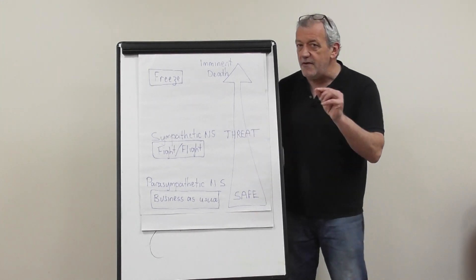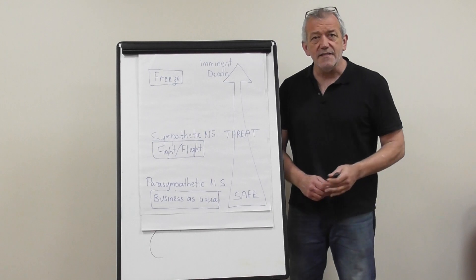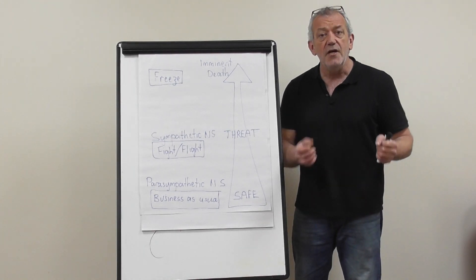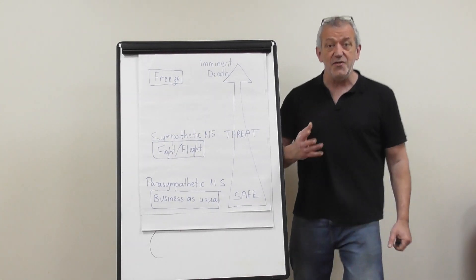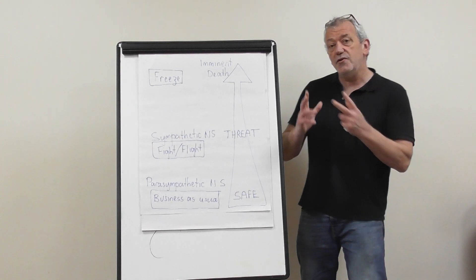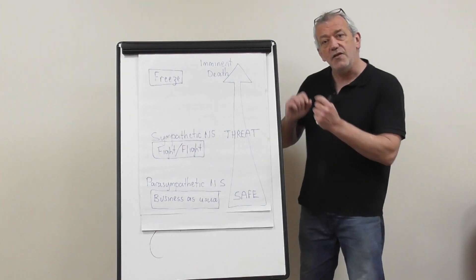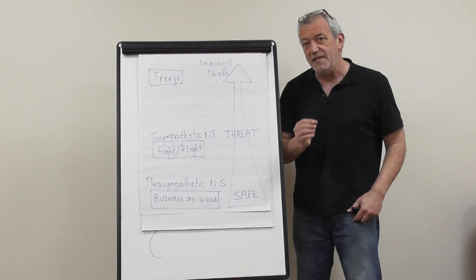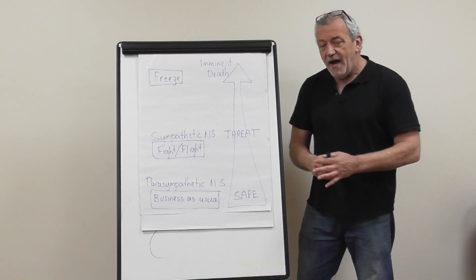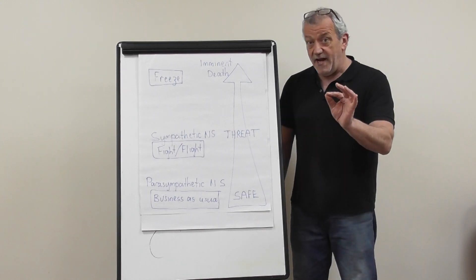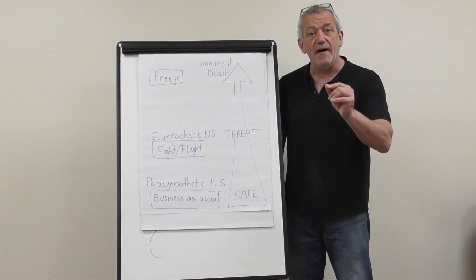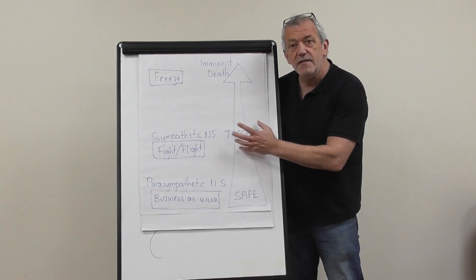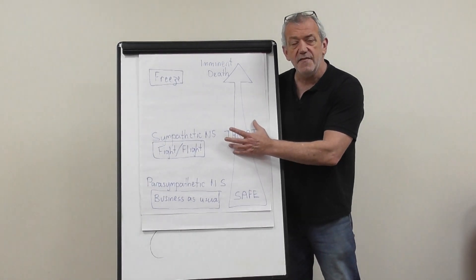This happens automatically — you can't turn it off or on. It's like somebody popping a balloon behind you: you will jump, turn towards the noise, risk-assess, and this happens in a split second. That's great, it keeps us going. However, here's the problem when we go to this sympathetic nervous system.